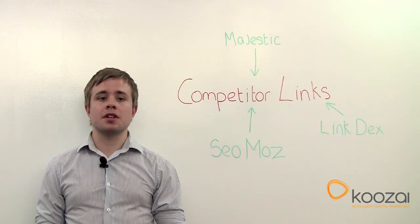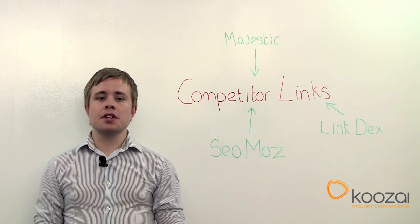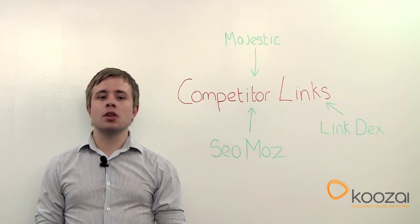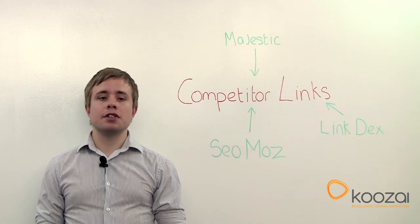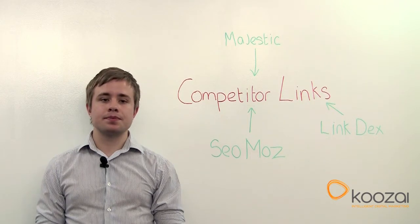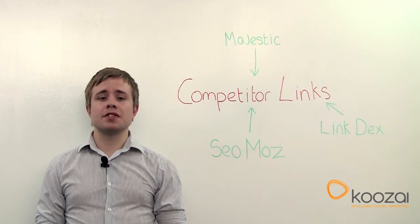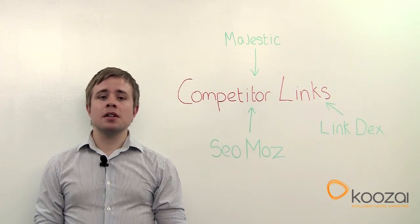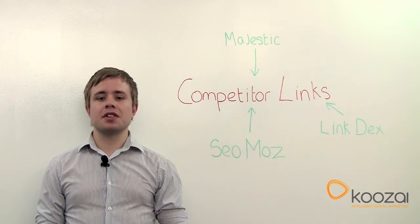So you might ask, why source competitor links in the first place? Sourcing competitor links is a good way of finding good quality sites which can include industry related blogs, directories, forums, bookmarking websites, Q&A sites and many others. These sites could eventually produce some great quality and relevant links for your website. Analysing your competitor links is a great way of finding these sites which you may have missed while utilising other search methods.